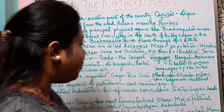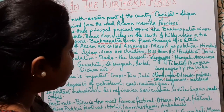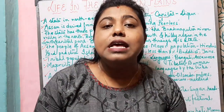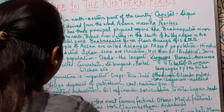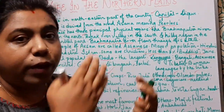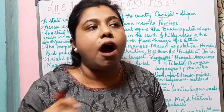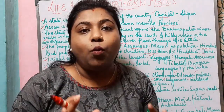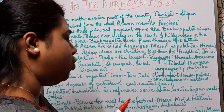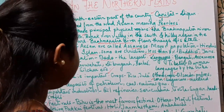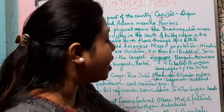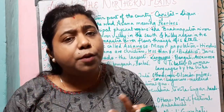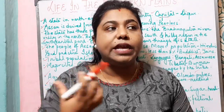Other festivals in Assam include the Majuli festival, Dehing Patkai festival, Ambapuchi and others. There are a lot of beautiful, serene places to visit in Assam. Kaziranga Wildlife Sanctuary is very famous because of the one-horned rhinoceros. Other places to visit include Majuli, Guwahati, Manas National Park, Pobitora National Park and the Kamakhya Mandir, which is a very holy religious place for Hindus.